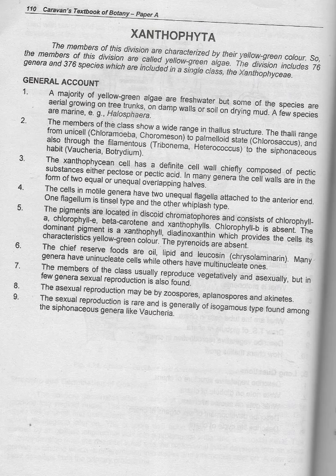Number three: the Xanthophycean cell has a definite cell wall chiefly composed of pectic substances, either pectose or pectic acid. In many genera, the cell walls are in the form of two equal or unequal overlapping halves.